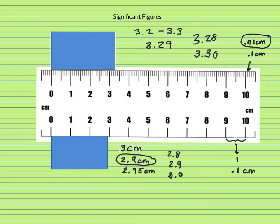So that's how we read a scale. Find the smallest division and then go one extra decimal point.